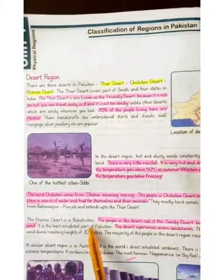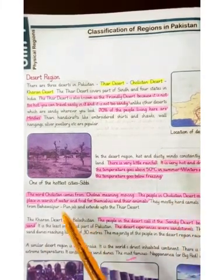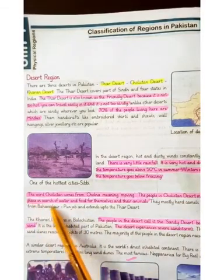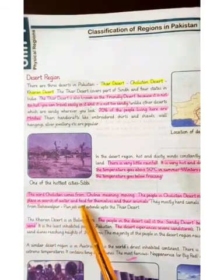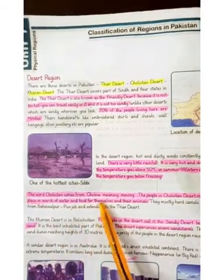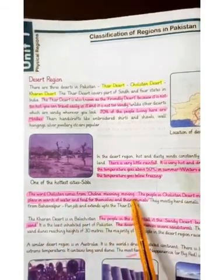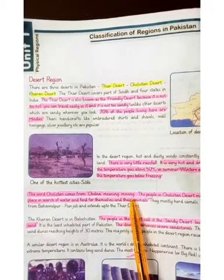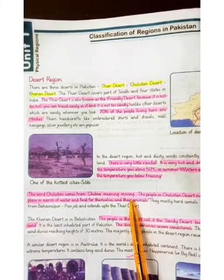The next is Cholistan desert. The word Cholistan comes from 'Cholna' meaning moving. Cholistan ka lafz Cholna se nikla hai jis ka matlab hai chal raha.